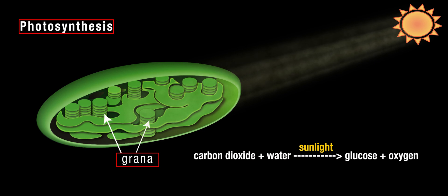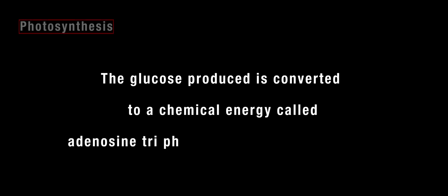Oxygen, which is a waste product in this reaction, exits the leaf through the stomata. The glucose produced is converted to chemical energy called adenosine triphosphate in the mitochondria.